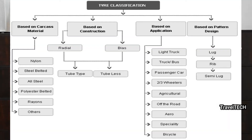The third broad classification is based on application — that is, the type of vehicle the tire is used on — including light truck, truck/bus, passenger cars, two- to three-wheelers, agricultural, off-the-road, aero, specialty, and bicycle tires. The final classification is based on pattern design, that is the lug, rib, and similar tires. These are the four broad types along with their sub-types.